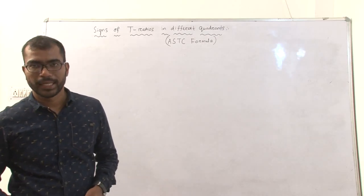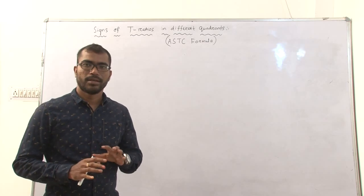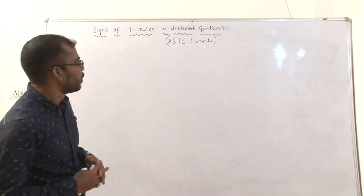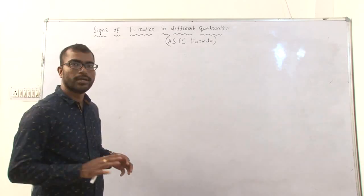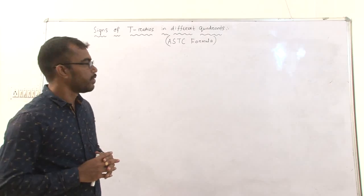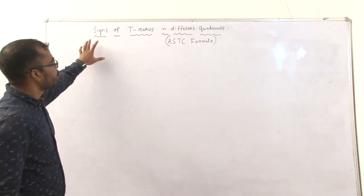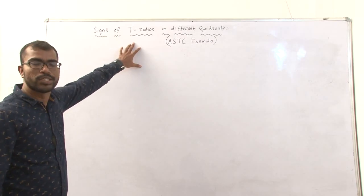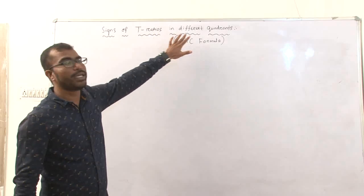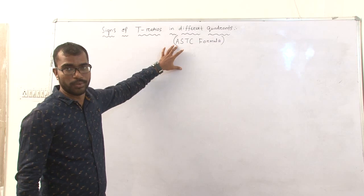Good morning students, welcome to online classes. In the previous session we discussed what is trigonometry and its t-ratios, the value of t-ratios, and how many t-ratios there are. In this session we will discuss the sign of t-ratios — trigonometry ratios — in different quadrants, also called the ASTC formula or ASTC rule.